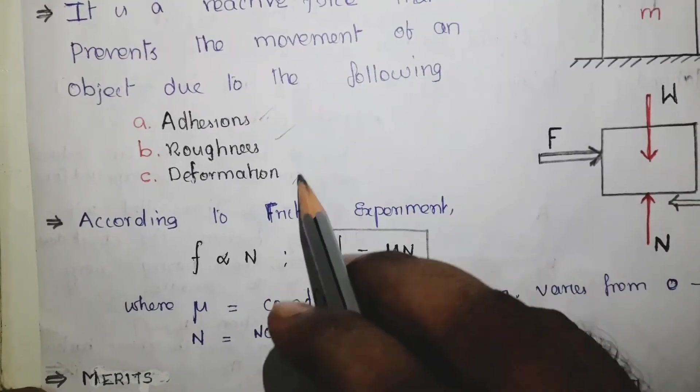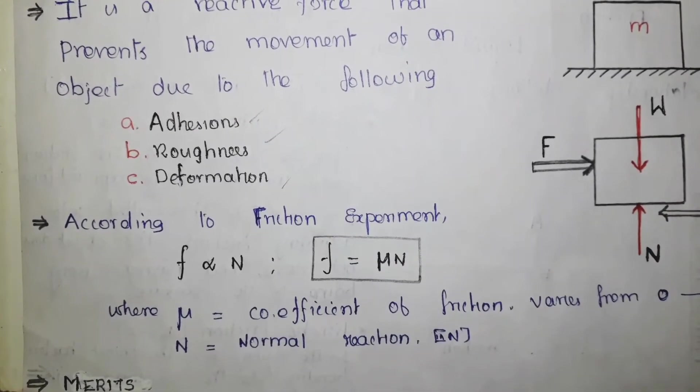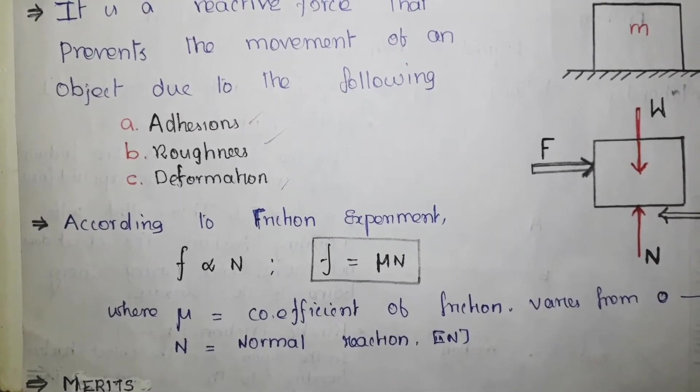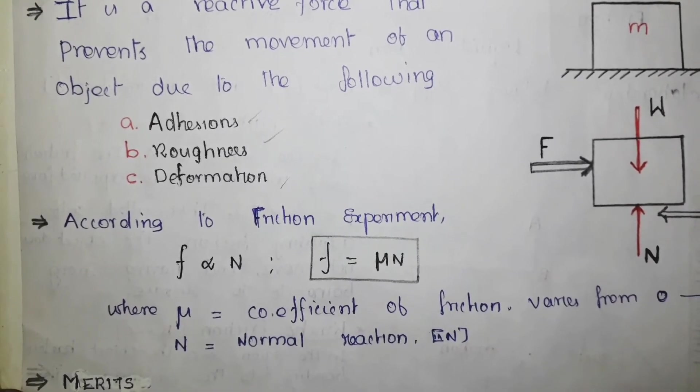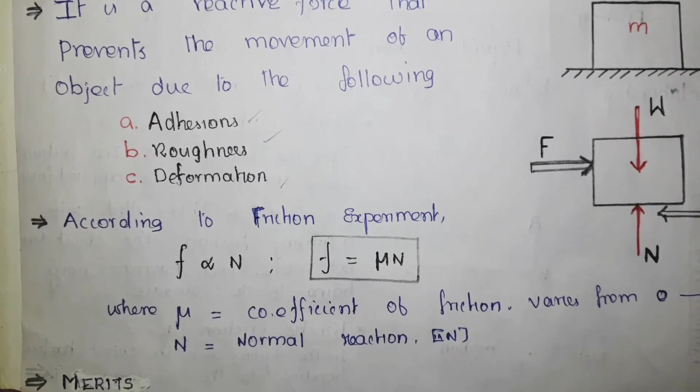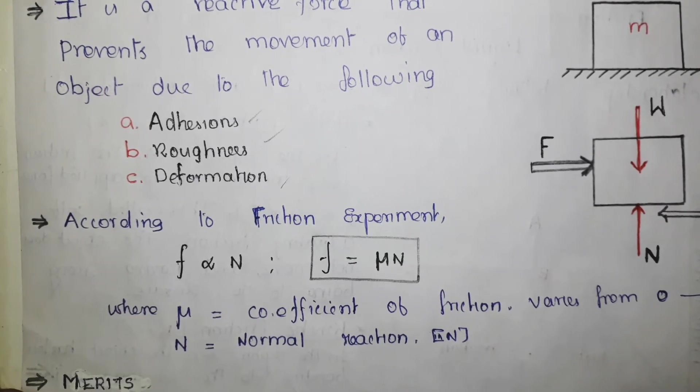Then third one is deformation. When a hard object is placed over a soft material, there will be deformation and that prevents the movement of one object over another one. These are the three reasons that develop at the contact point.